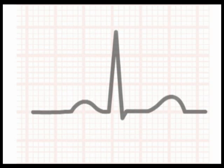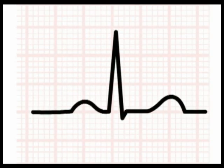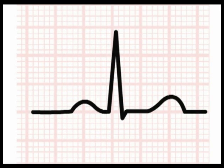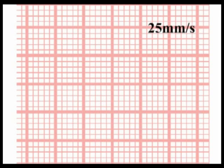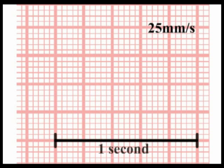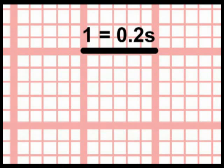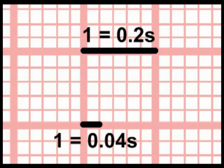In addition to calculating heart rate, the fact that distance on the ECG paper equates to time allows us to use the readout to time the duration of the major events of the cardiac cycle. At a standard recording speed of 25 mm per second, 5 large squares corresponds to 1 second, therefore 1 large square corresponds to 0.2 seconds, and 1 small square to 0.04 seconds.